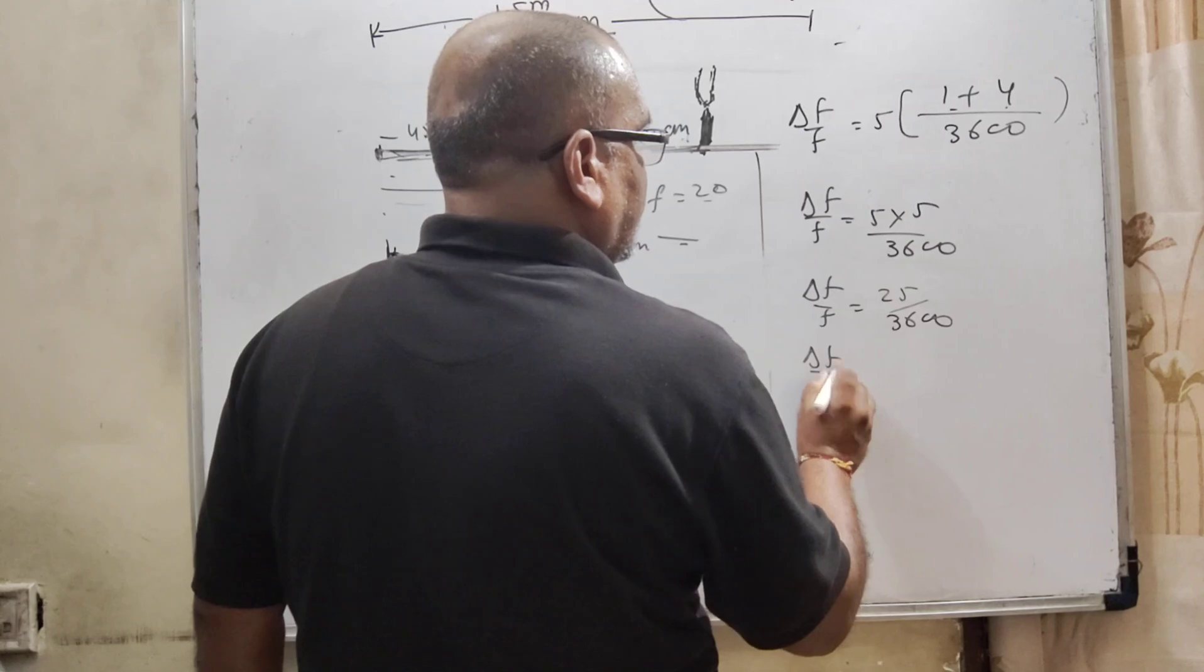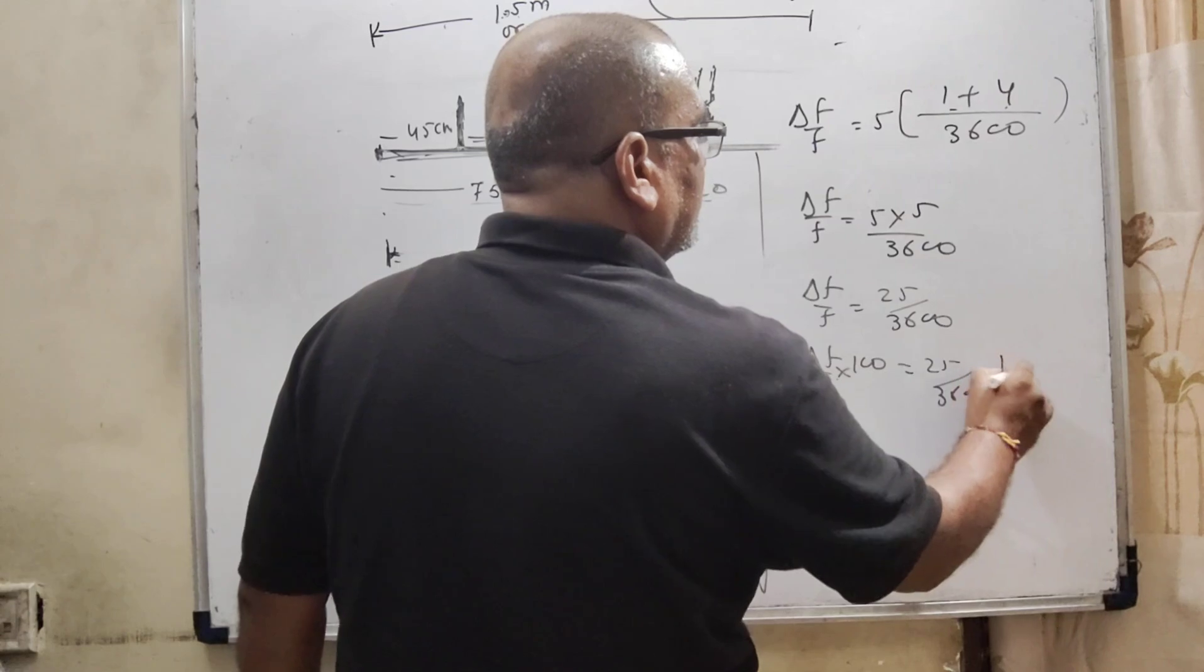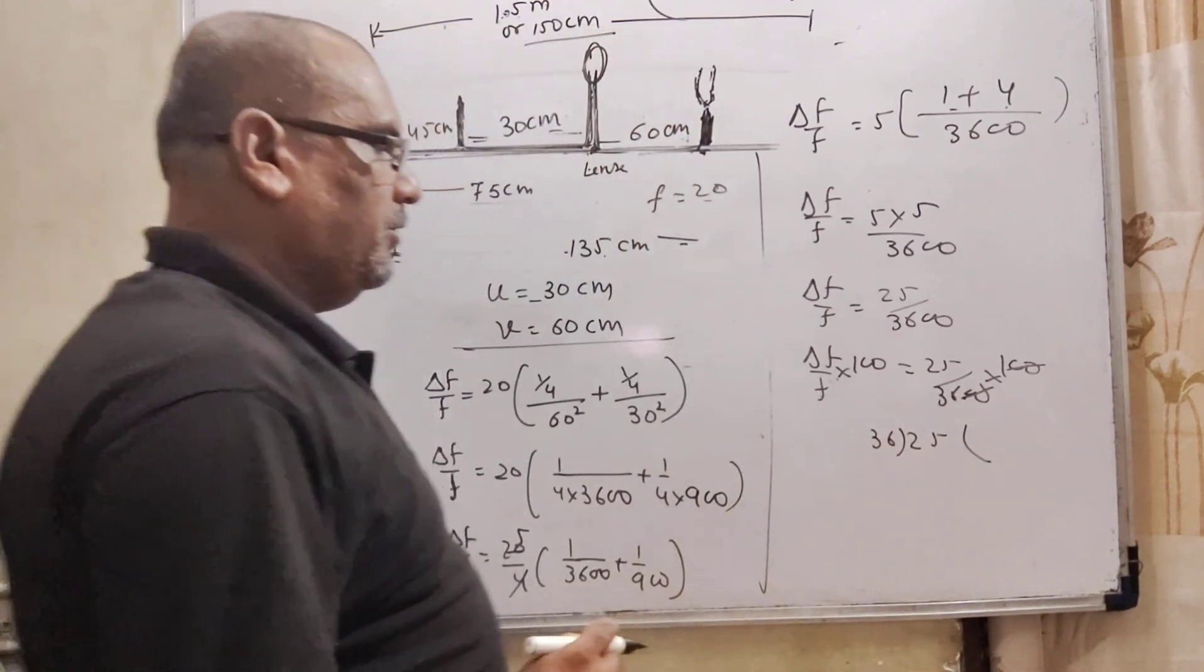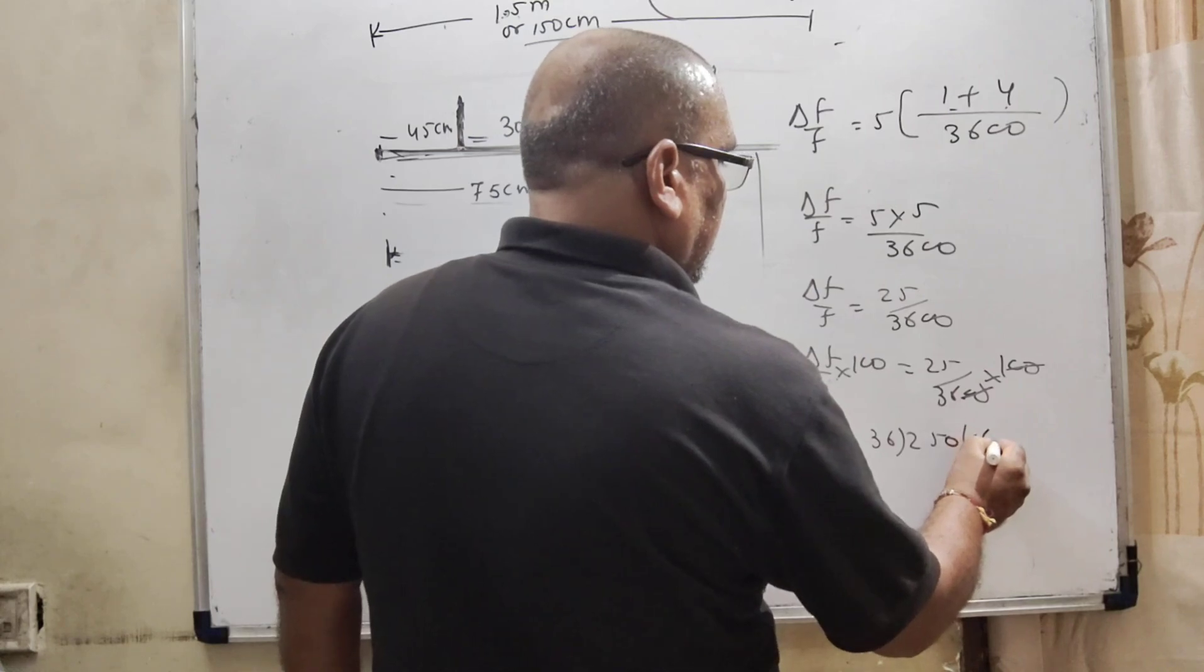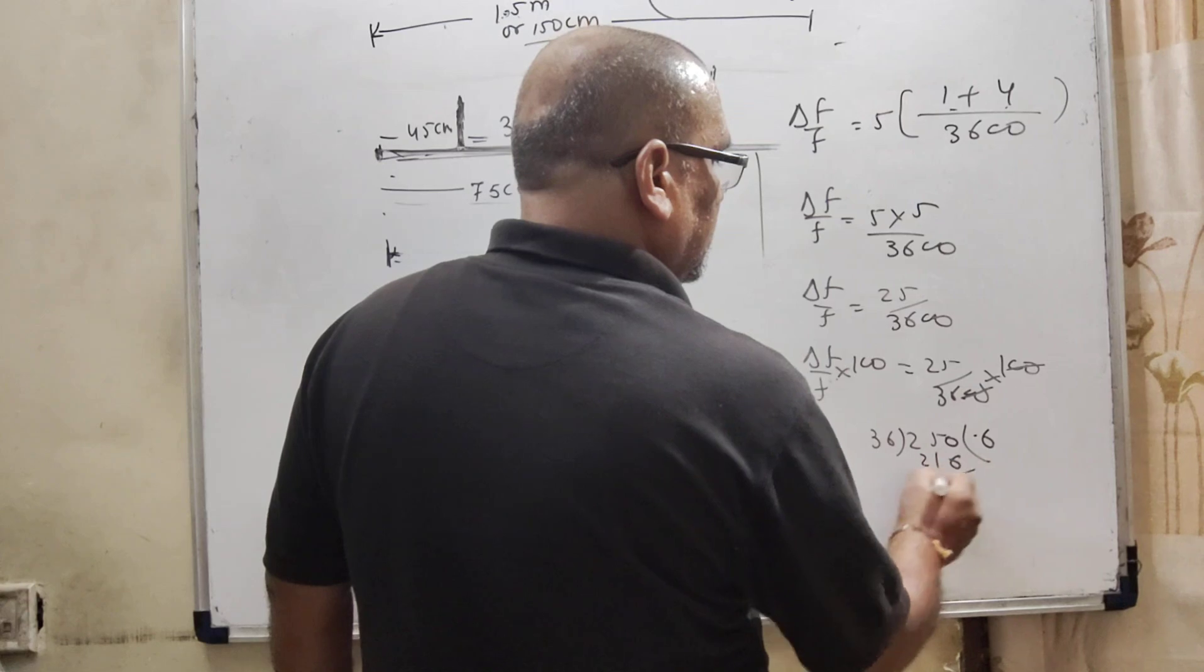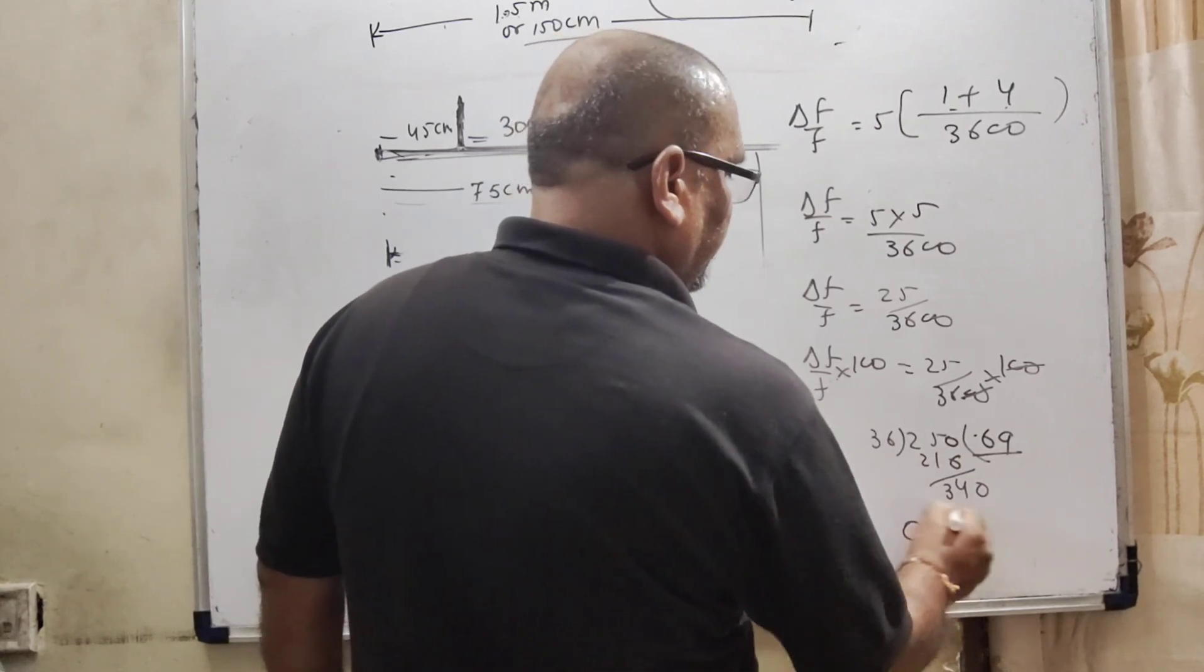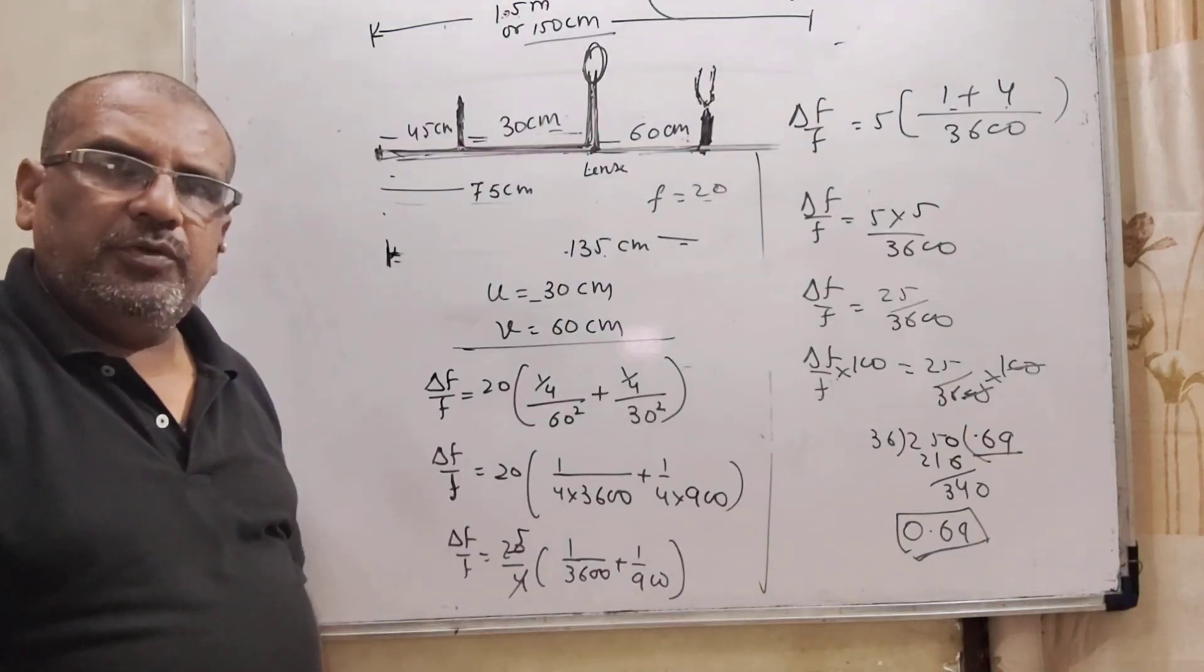Now, we have to require the percentage, so multiply by 100 both the sides. So 36 upon 36 divided by 20 divided to 25 that is point zero and six. So here approximately 0.69, this is percentage error of focal length. Okay, I hope you understood this question.